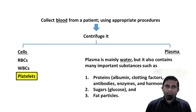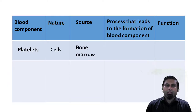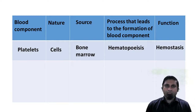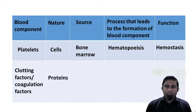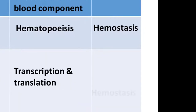Among the proteins, one particular type is of importance to us in this discussion: the coagulation proteins, the clotting factors. The platelets are cells produced from the bone marrow by the process of hematopoiesis and they are involved in hemostasis. The coagulation factors or clotting factors are proteins produced from the liver by the process of transcription and translation, and they are also involved in the process of hemostasis.